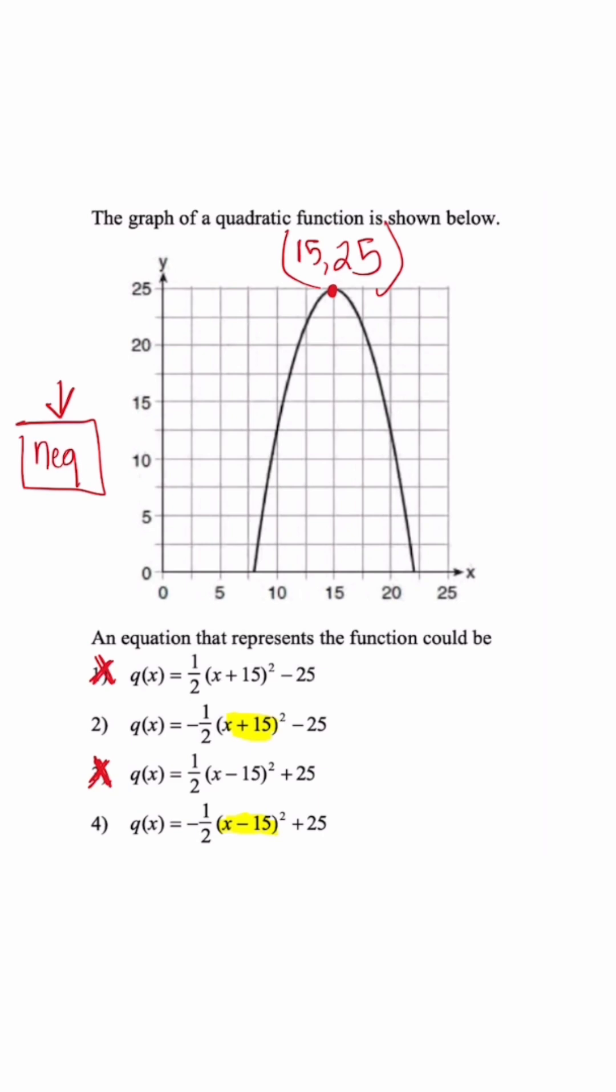So when we pay attention to answer choice two, this is a negative 25. So this should be under the x-axis and not above. So we know this answer choice is incorrect, and the correct answer is going to be four.